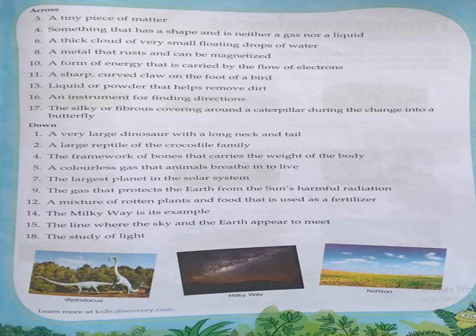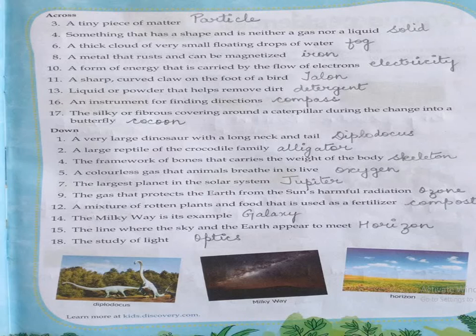The next clue is: a mixture of rotten plants and food that is used as fertilizer. You can make this at home — take kitchen waste like vegetable and fruit peelings, put them in a pit at home, cover it, and the rotten plants and food turn into a fertilizer known as compost — C-O-M-P-O-S-T.